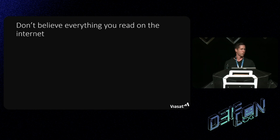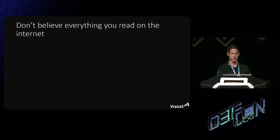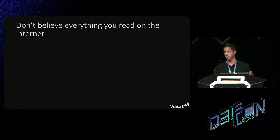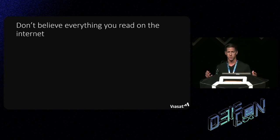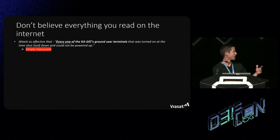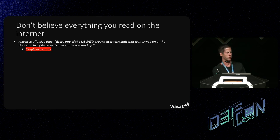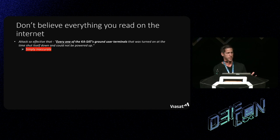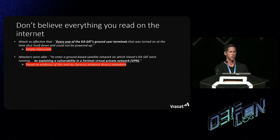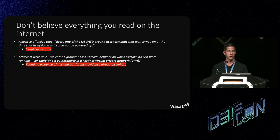First word of warning: don't believe everything you read on the internet. As we went through this attack, we were also reading the news. Our main priority was keeping users online and ultimately patching any findings. One claim was that the attack was so effective that every one of the KASAT ground user terminals that was turned on at the time shut itself off and could not be powered up — that is not accurate. Another claim was that attackers entered the network by exploiting a vulnerability in the Fortinet VPN — there was no forensic evidence supporting that.